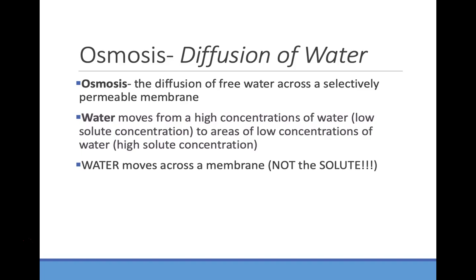Osmosis is a special type of diffusion — specifically the diffusion of water molecules, and in this case it has to be across a membrane. This is really important for organisms that live in an aquatic environment, and also for any cells in your body that are bathed in fluid. Most of our cells are surrounded by water, so the way that water moves into and out of the cell is really important for the health and survival of that cell.